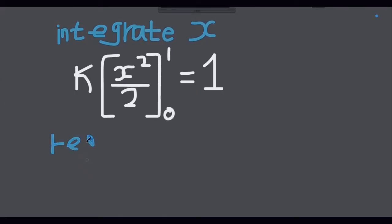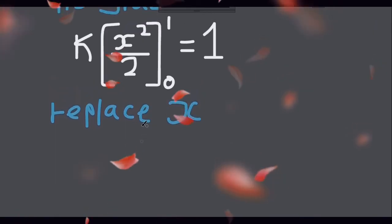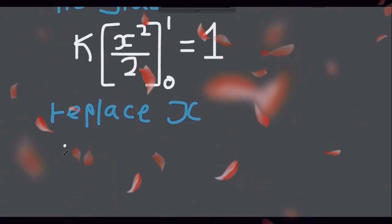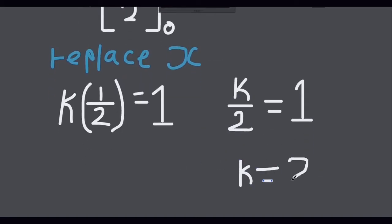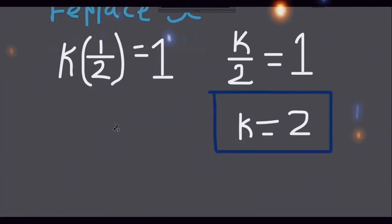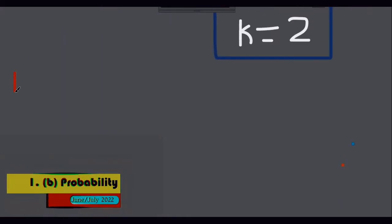Next we will replace the value of x with the limits which are 1 and 0 so that we may find k. So k is supposed to be 2. That k is 2. I think we have answered the first question.